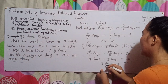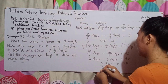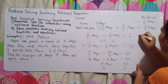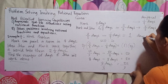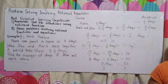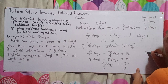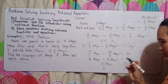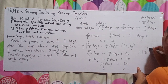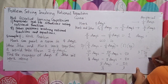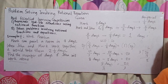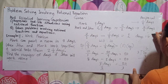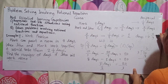Divide both sides by 3: 20 divided by 3 equals 6 remainder 2, so J equals 6 and 2/3 days.